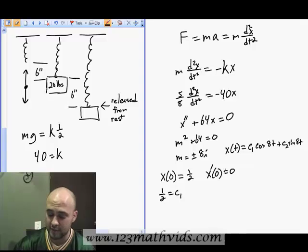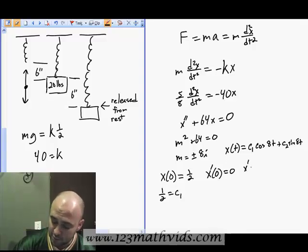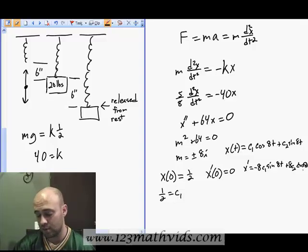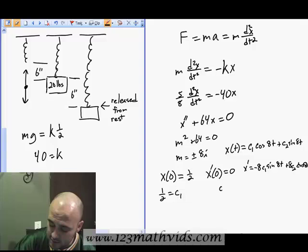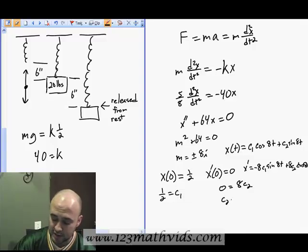I'm going to apply the second one where I need to find the derivative. So x prime is negative 8c1 sine of 8t plus 8c2 cosine of 8t. Now I apply my initial condition. If t is 0, then sine of 0 is 0, so that first term goes away. Cosine of 0 is 1, so 0 equals 8c2, which implies c2 is 0.